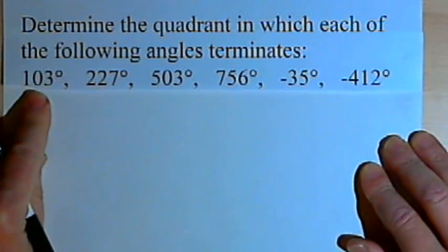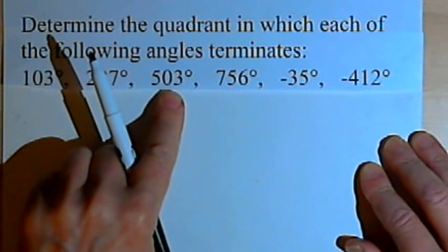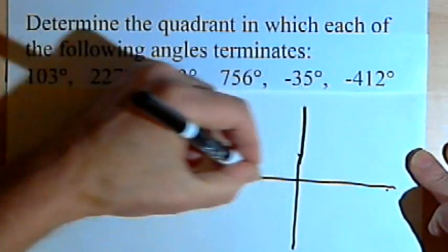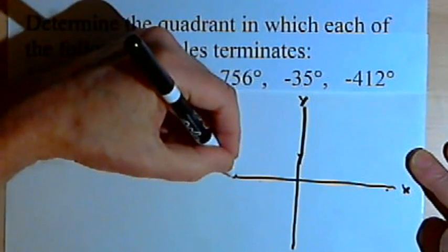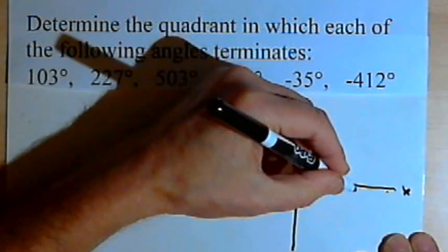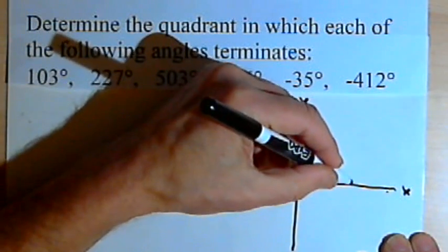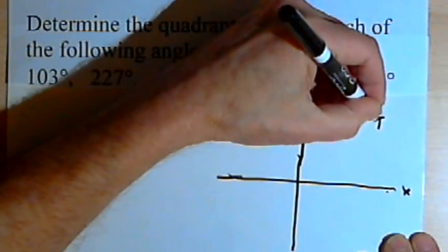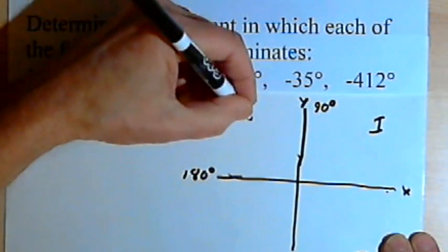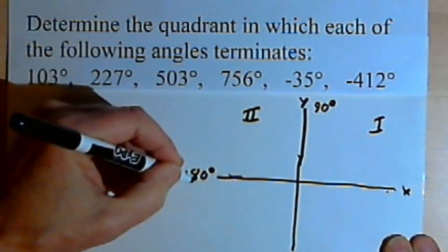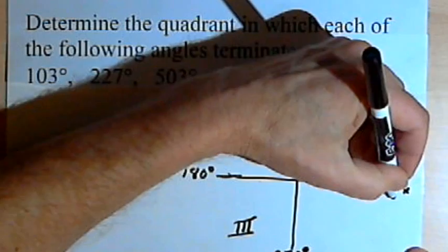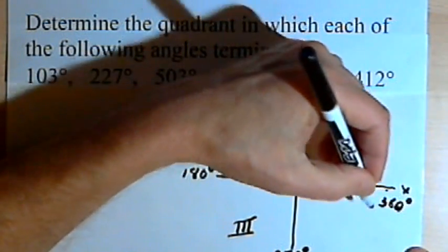We're given a series of angles: 103 degrees, 227 degrees, 503 degrees. I'll draw a rough coordinate plane with an x-axis and a y-axis. If we draw an angle in standard position, it starts on the positive side of the x-axis and goes counterclockwise through the first quadrant until 90 degrees, then through the second quadrant from 90 to 180 degrees, through the third quadrant from 180 to 270 degrees, and through the fourth quadrant from 270 to 360 degrees.